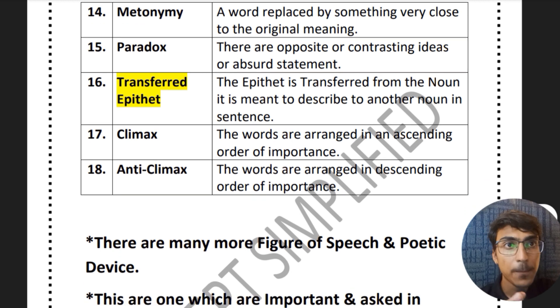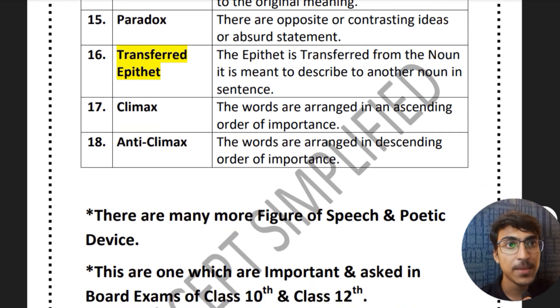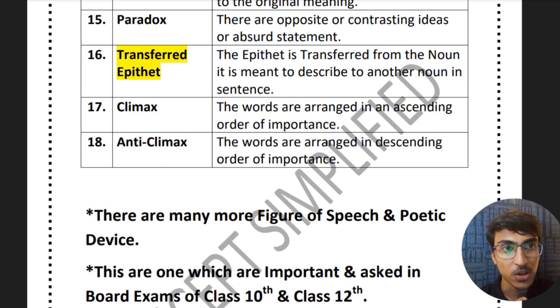Then transferred epithet — the epithet is transferred from the noun it is meant to describe to another noun in the sentence. Then climax — words are arranged in ascending order of importance. Then anticlimax — words are arranged in descending order of importance.